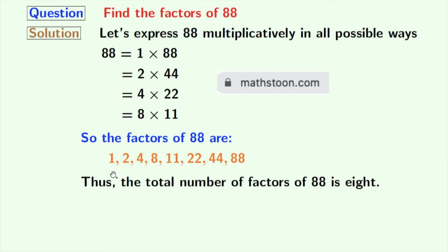Now, if we look closely at these factors, we can see that 2 and 11 among these numbers are prime numbers, because these 2 numbers do not have any divisor other than 1 and that number itself. So we can say that the prime factors of 88 are 2 and 11.